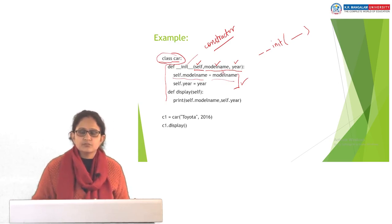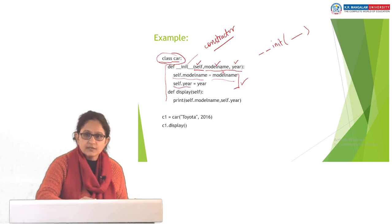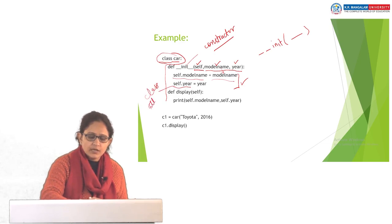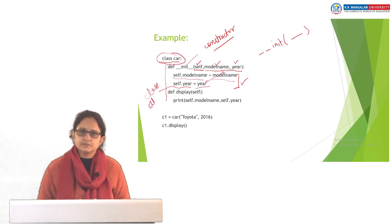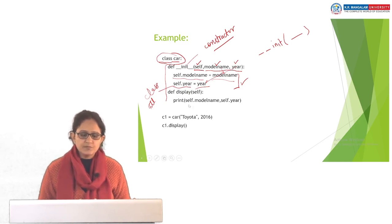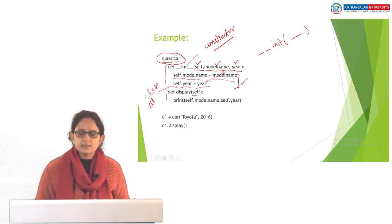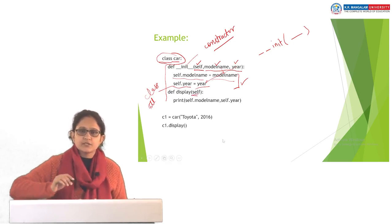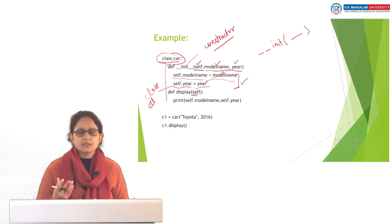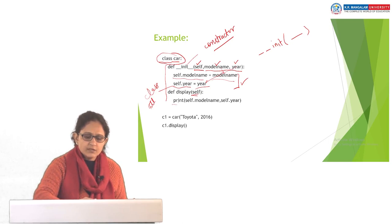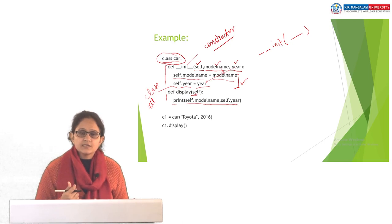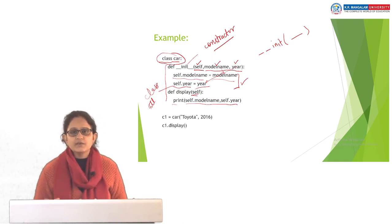Self.model_name is the attribute of the class, and model_name is the value being passed from the init method. Self.year is another class attribute, and we are passing its value from the init method. The second method is the display method to display information. We define it as def display, and because we have no additional parameters to pass, we just pass the self parameter. Self is the default parameter required in every method created under a class. Here we are accessing the class attributes and printing their values using self.model_name and self.year.